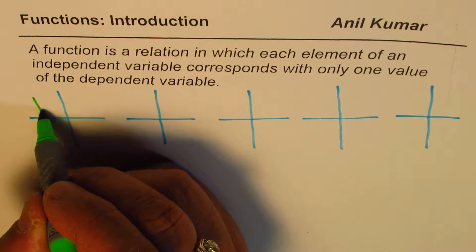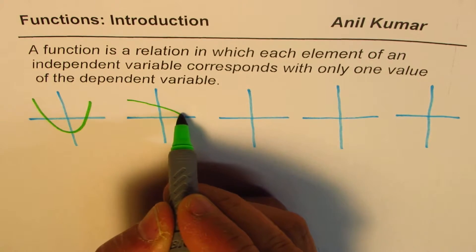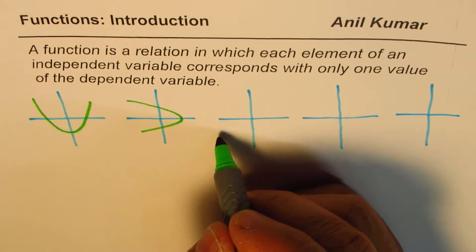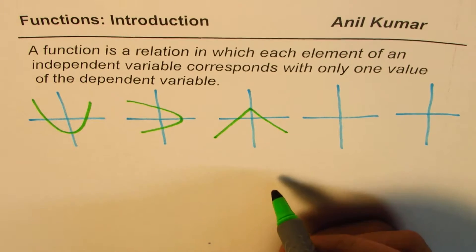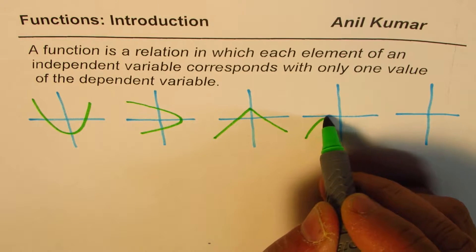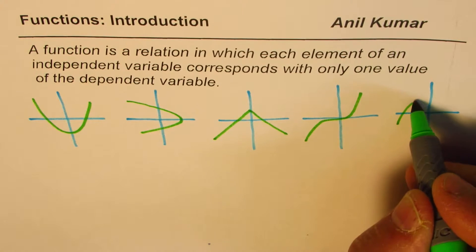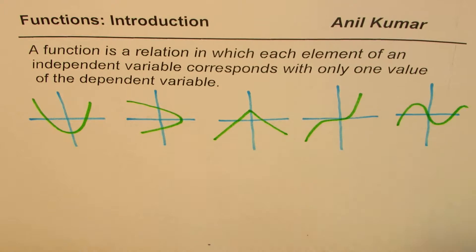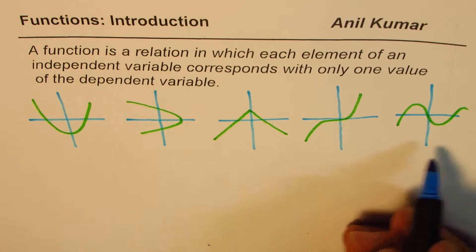So we have five different relations sketched on graphs — relation one, relation two, relation three, relation four, and relation five, each shaped differently. Out of these, you have to figure out which are functions and which are not functions. This is when we are given the graph.